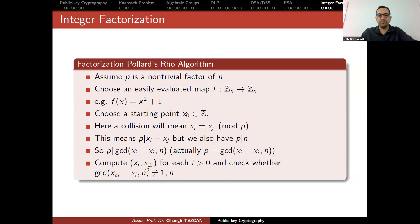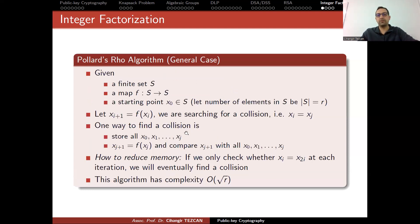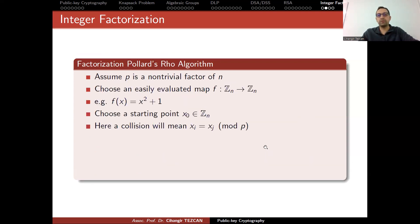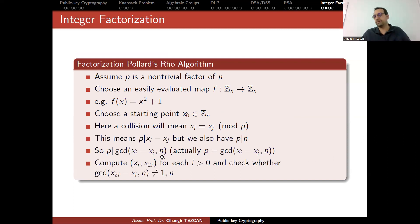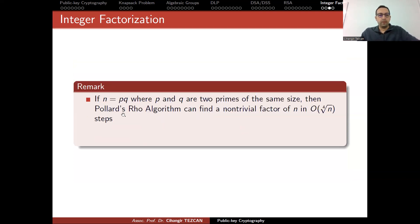In practice, this would mean that P equals this greatest common divisor. So compute xi and x2i for each i, and check whether the greatest common divisor of this value and N is different than 1 or N. This is how the factorization works when you use the Pollard-Rho algorithm. This was for the general case. Here, the collision would mean that they are equivalent modulo P, and this way you can use it to check if it is a divisor of N by this calculation.